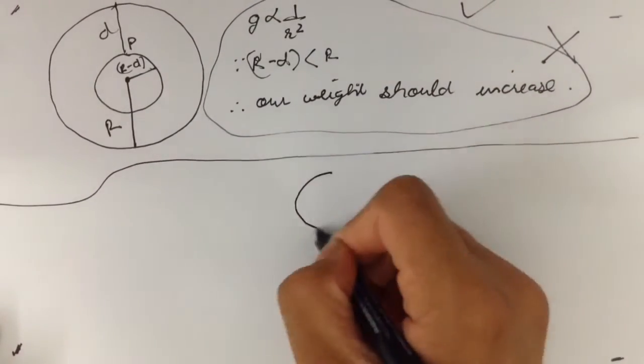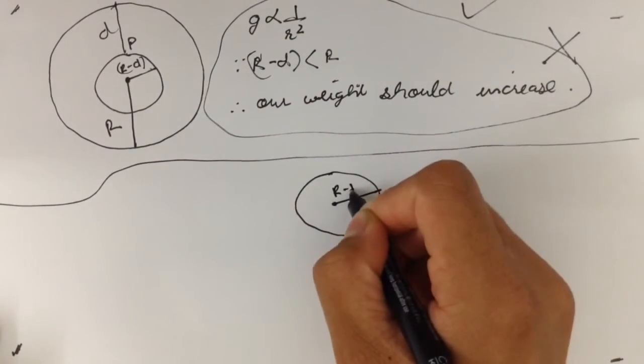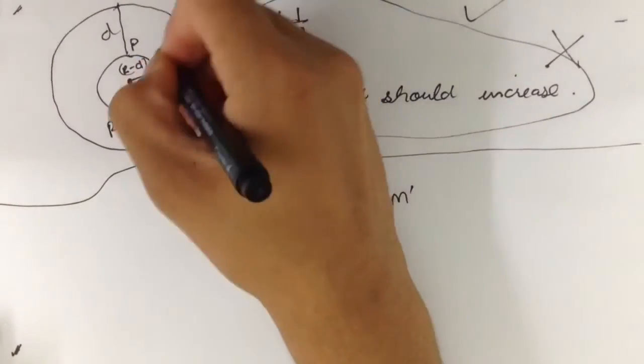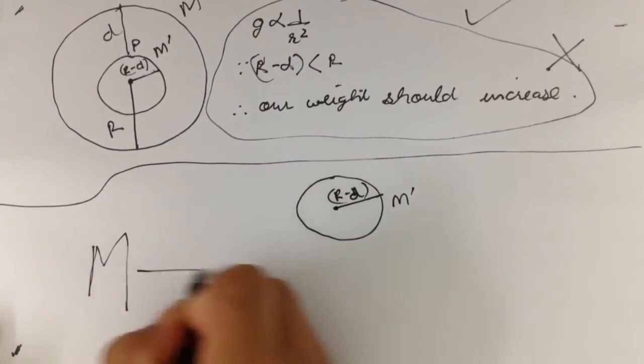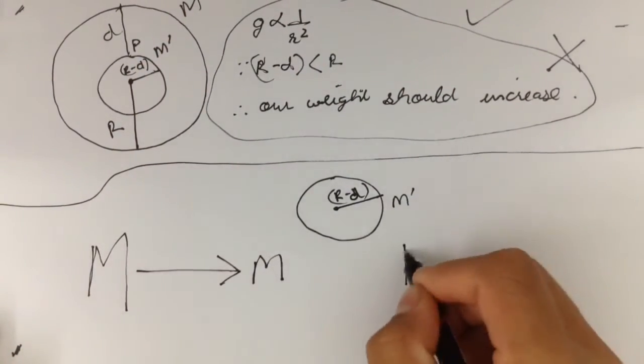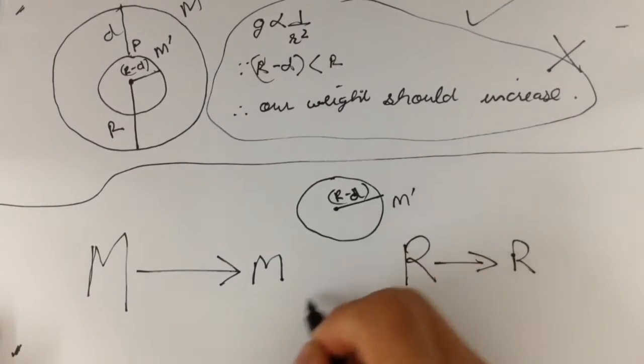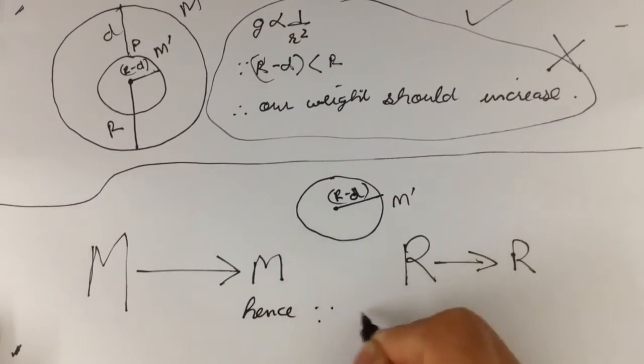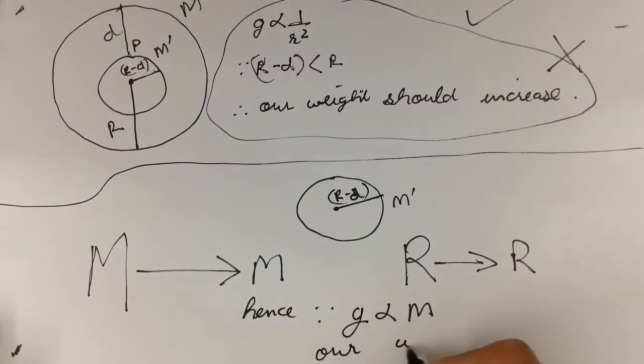The reason is, we end up forming a part of a new sphere that has a new mass M'. And since M' is less than M, the mass of the Earth, and the change in mass is by a greater factor than change in radius, our weight inside the Earth decreases.